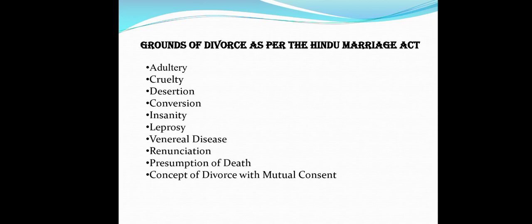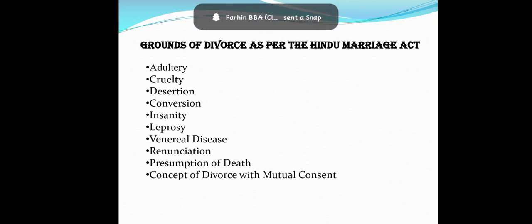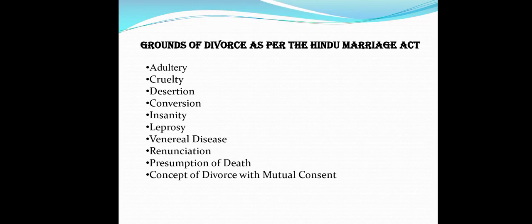The first ground is Adultery. The concept of adultery may not be considered as an offense in many countries. As per the Hindu Marriage Act, in matrimonial offenses, adultery is considered as one of the most important grounds for seeking divorce. Adultery means the consensual and voluntary intercourse between a married person with another person, married or unmarried, of the opposite sex. Even if the intercourse between the husband and his wife is considered under bigamy, the person is liable for adultery. The concept of adultery was inserted under the Hindu Marriage Act by the Marriage Laws Amendment Act 1976.